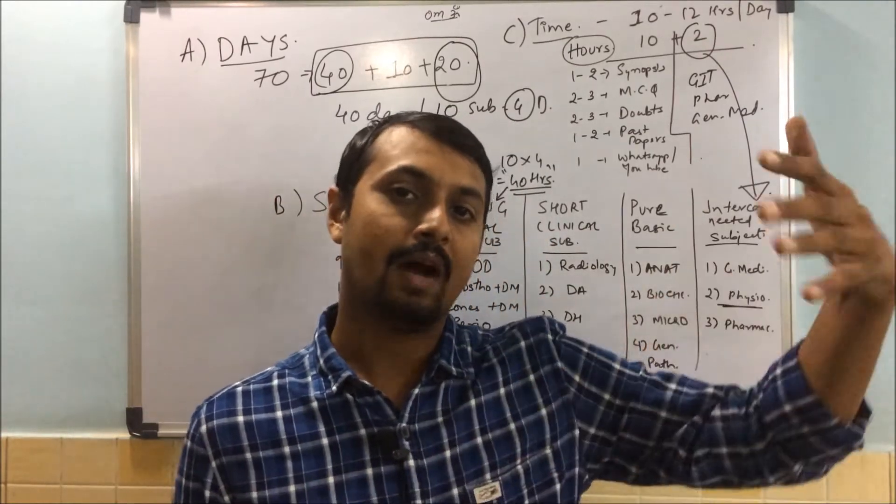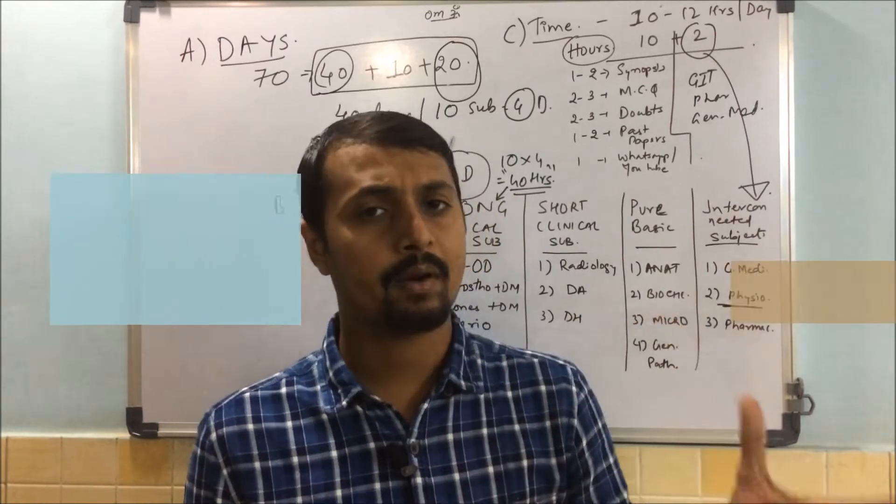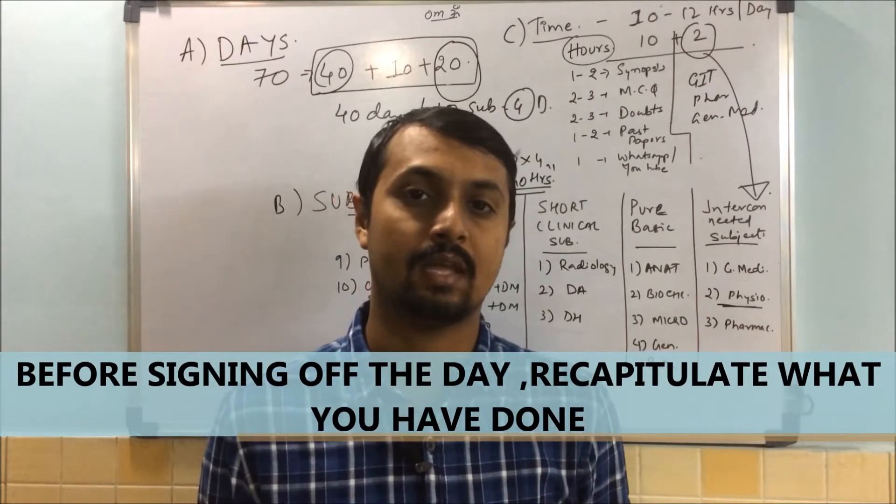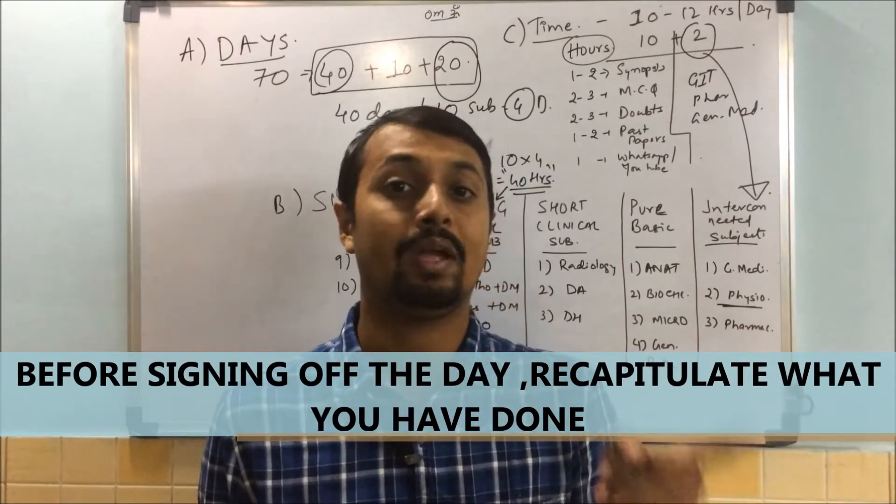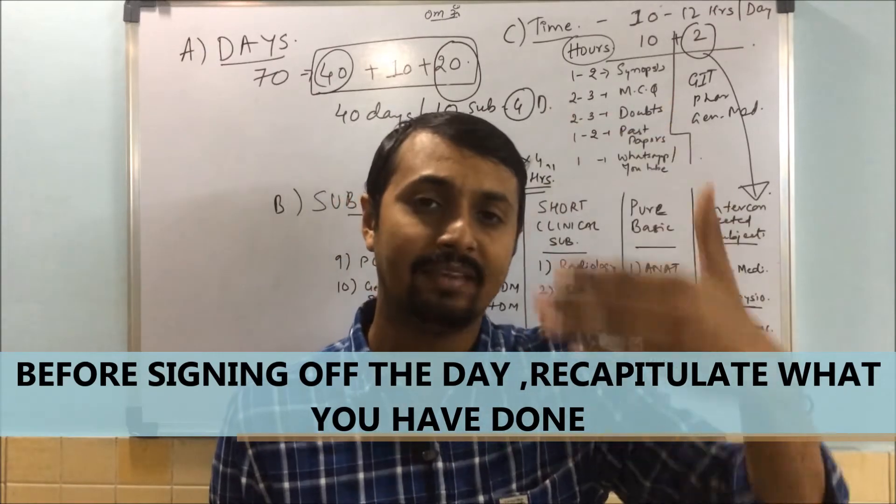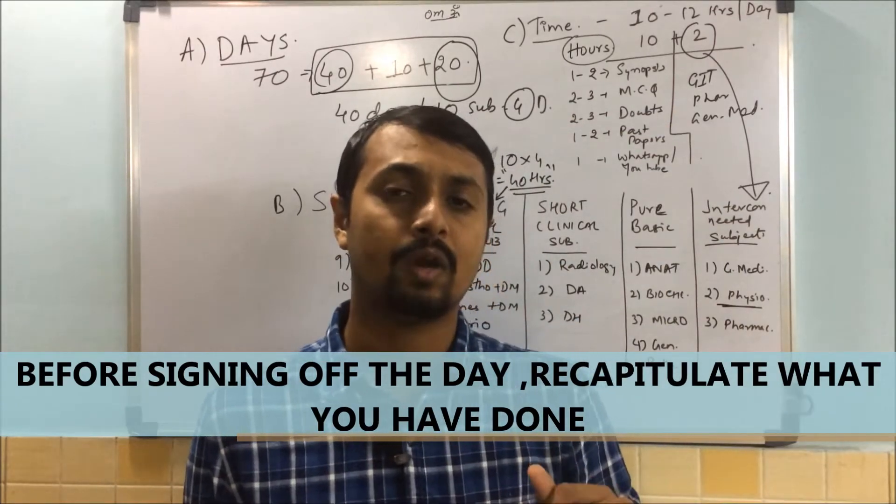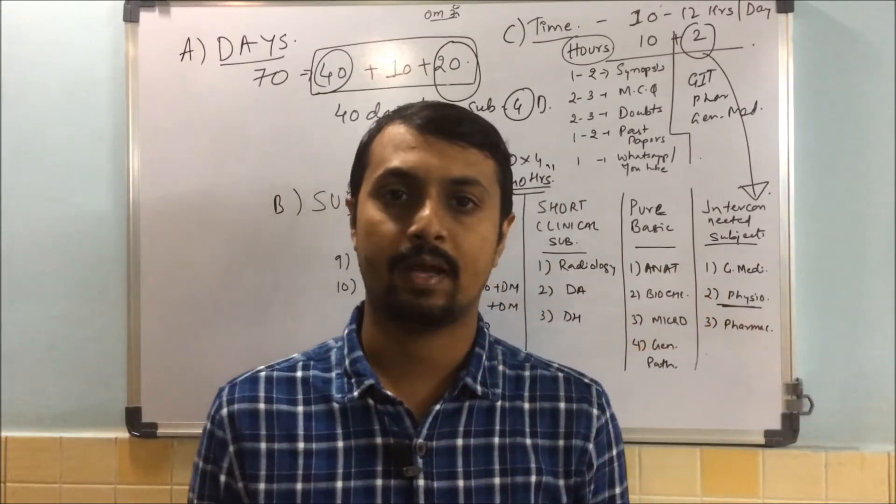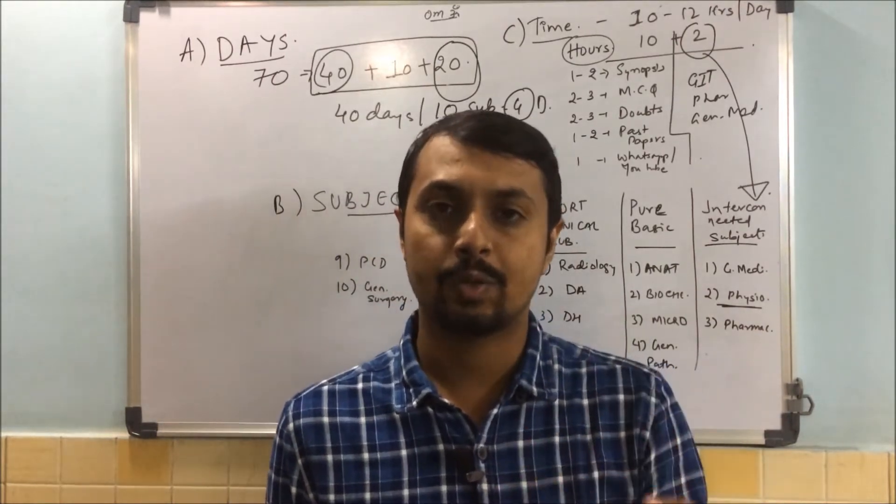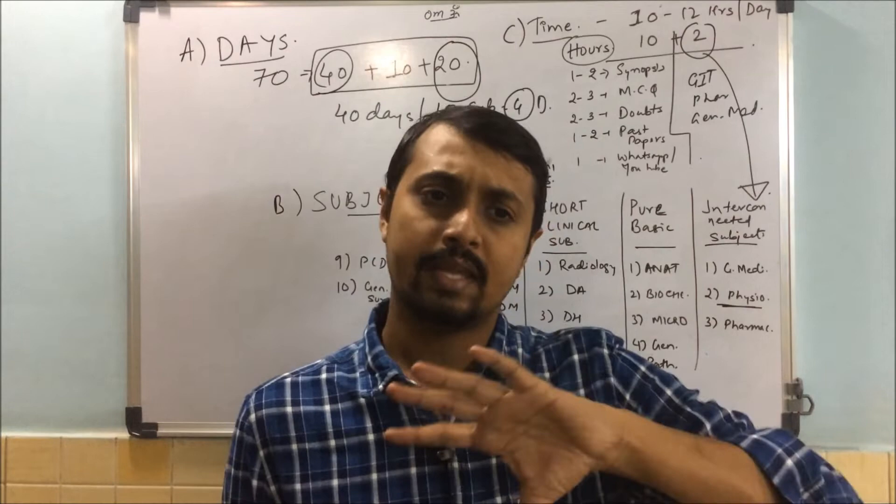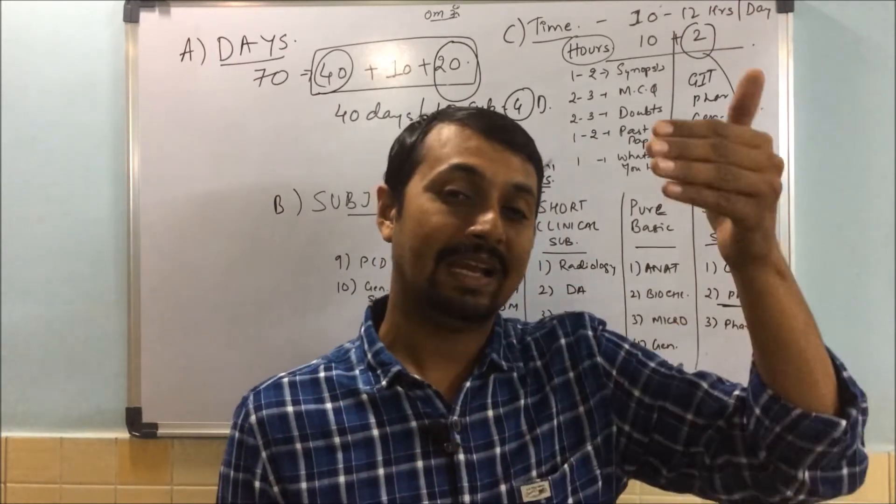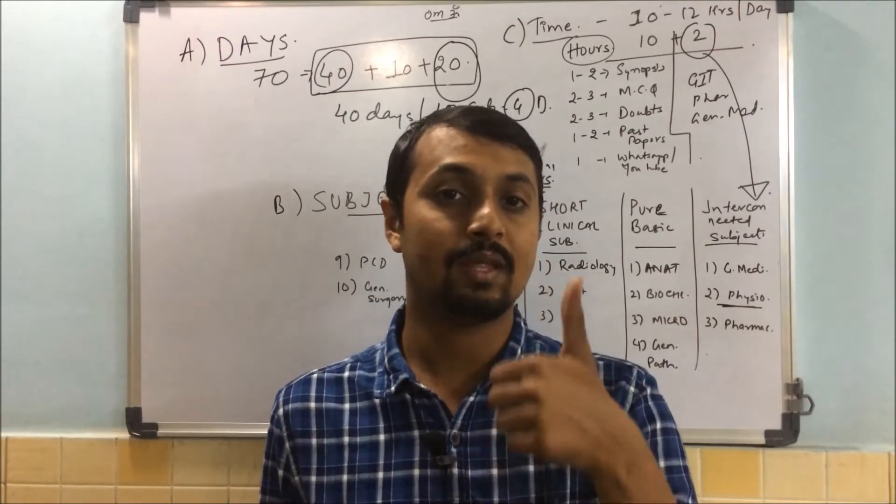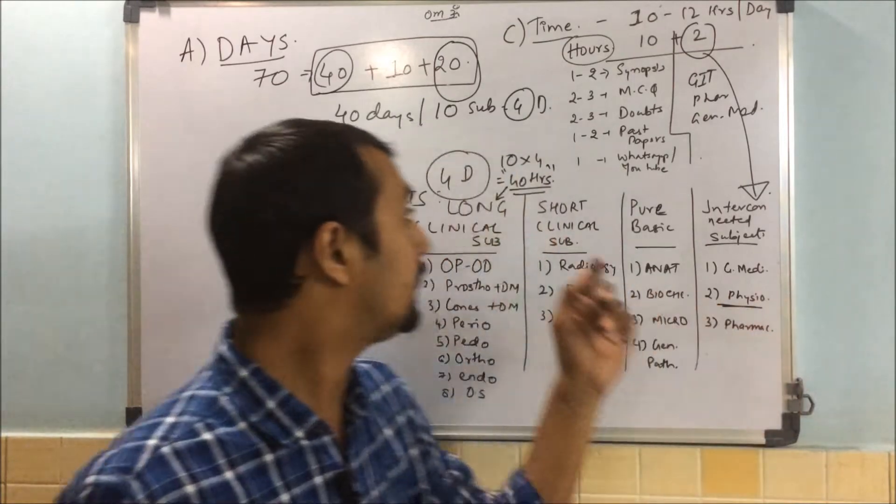For example, if you study GIT of physiology one day, read synopsis then MCQs. Next day you study pharmacology, then other day medicine part. Around six to seven systems are there, so within 40 days you can complete at least twice your medicine, physiology, and pharmacology. At the end of the day, in one hour take a quick revision of everything you studied, so that becomes your second revision.